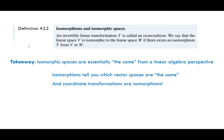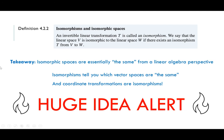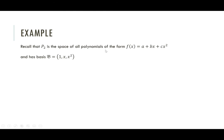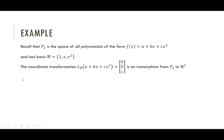Importantly, coordinate transformations are isomorphisms — and this ends up being a huge idea. For example, recall that P2 is the space of all polynomials of the form s(x) = a + bx + cx², so all polynomials of degree less than or equal to 2. This space has a basis of 1, x, and x². Since a coordinate transformation is an isomorphism, we have an isomorphism between P2 and R3. The space of all polynomials of degree less than or equal to 2 is isomorphic to R3.